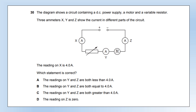The diagram shows a circuit with a DC power supply, a motor, and a variable resistor. Three ammeters X, Y, and Z show the current in different parts of the circuit. The reading on X is 4 amps. This is a series circuit, so current is the same everywhere. Therefore Y and Z also read 4 amps — that's option B.